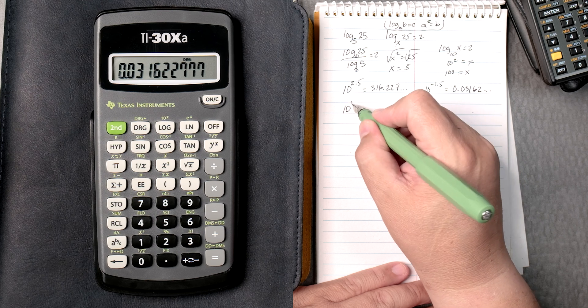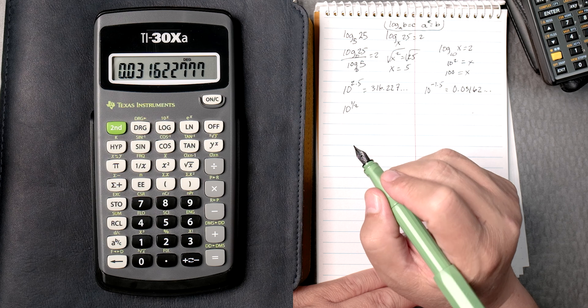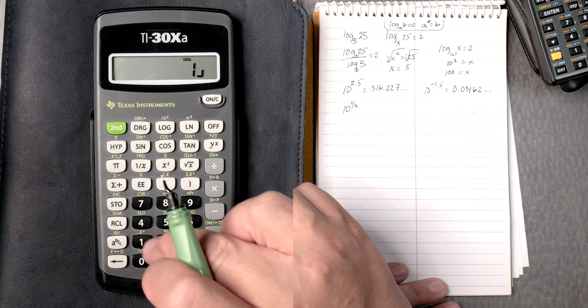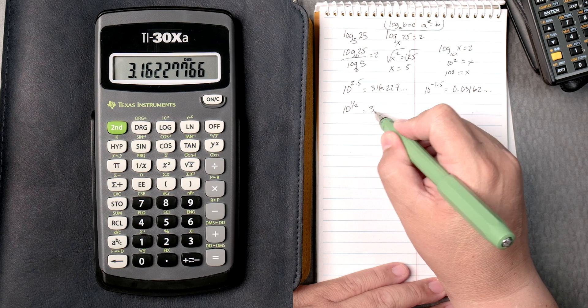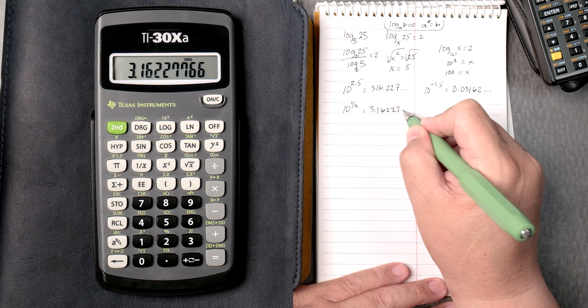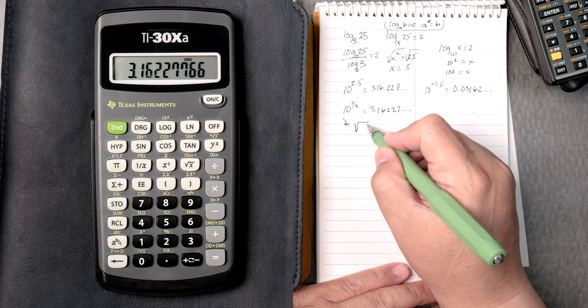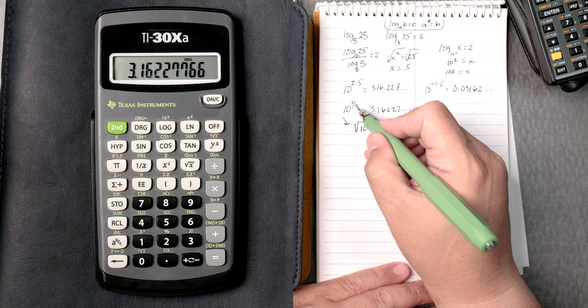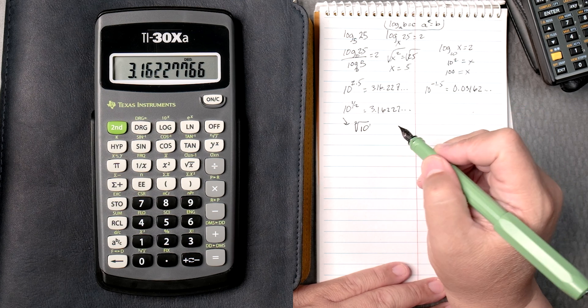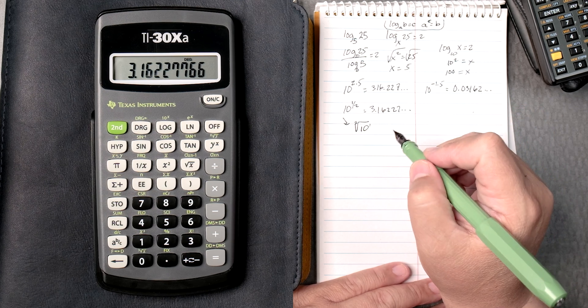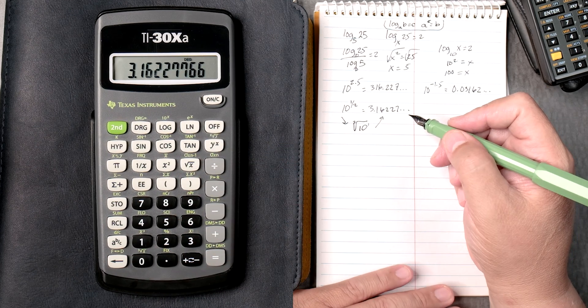10 to the half, okay. So let's try this. Let's say 1abc2, and then second, log, and it gives you the answer, 3.16227, and so forth. This one can also be rewritten as the square root of 10. The index of 2 is over here, but it doesn't have it, it's assumed a 2, and then a 1. So this is really the square root of 10, 10 square root, gives you the same answer. Really neat.